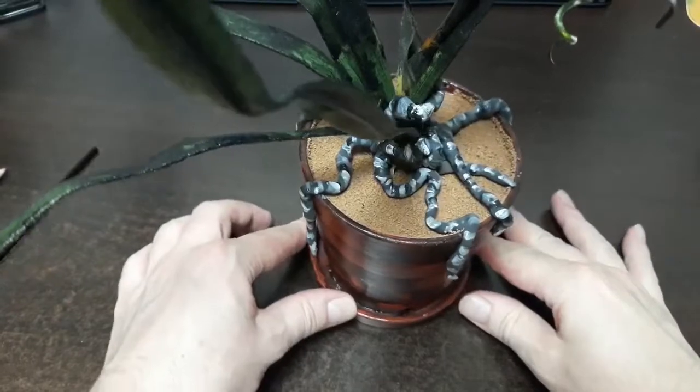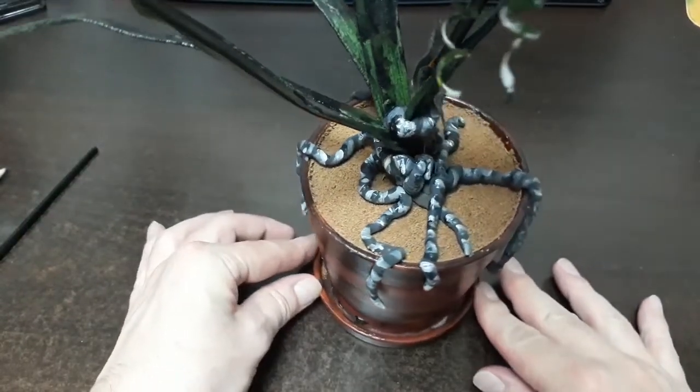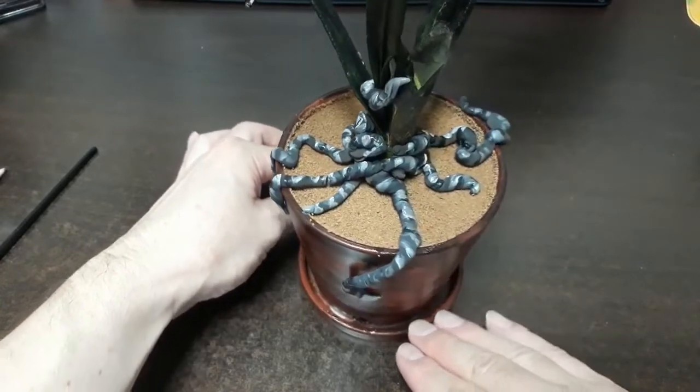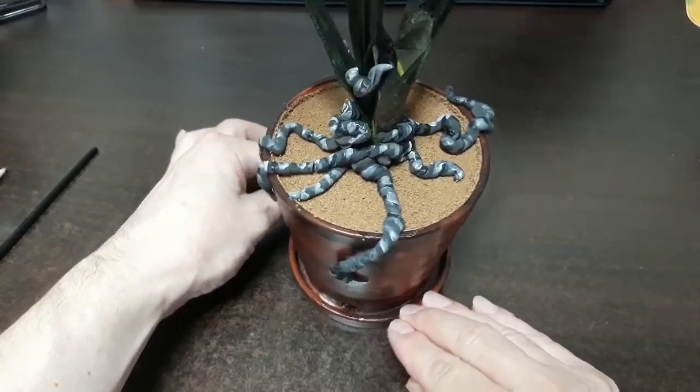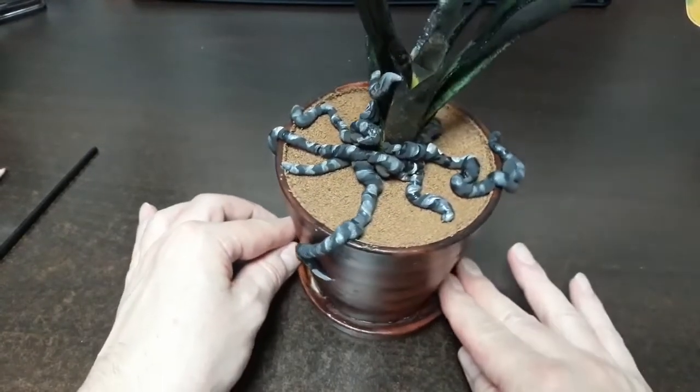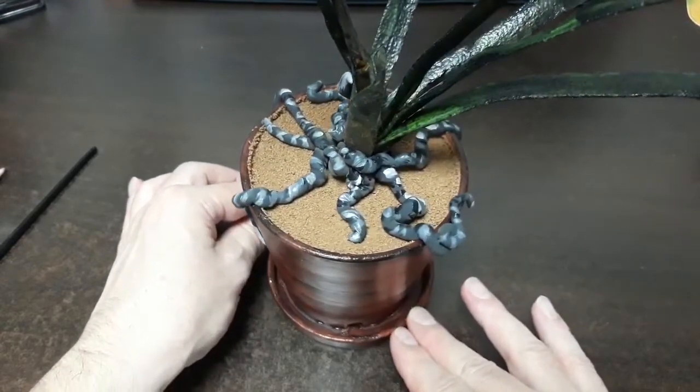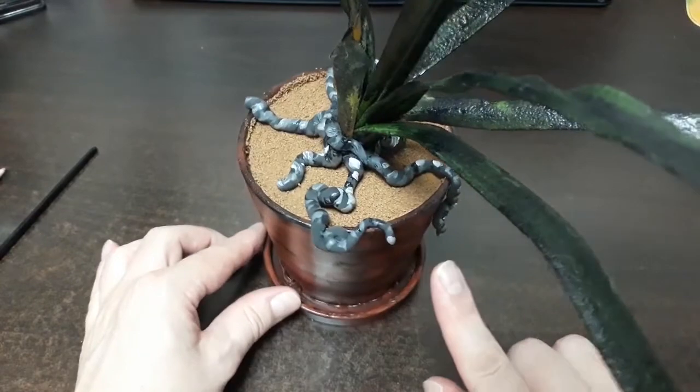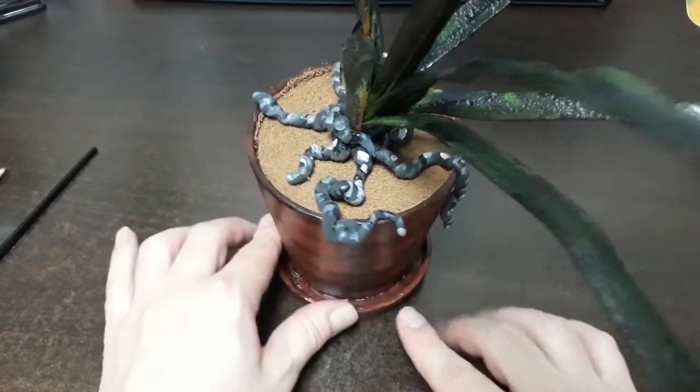Check out this root system. All the snarls and gnarls and twists and turns all came out in the detailing. And I made sure that each and every one of the ends had a white tip on it like a fingernail.